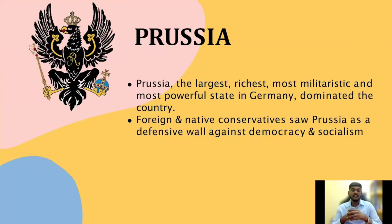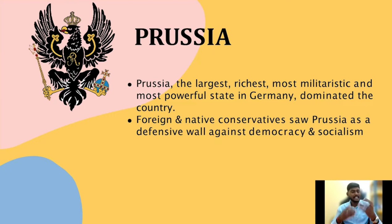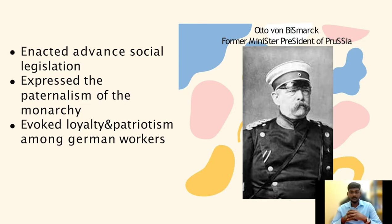Prussia — the largest, richest, most militaristic, and most powerful state in Germany — dominated the country. Foreign countries saw Prussia as a powerful ally. Foreign and native conservatives saw in Prussia a bulwark against democracy and socialism, while native nationalists relied on Prussia to forge a unified Germany. Prussia dominated the German government and armed forces. A series of military successes further strengthened nationalism under Prussian leadership. Advanced social legislation enacted by Bismarck expressed the paternalism of the monarchy and evoked loyalty and patriotism among German workers.